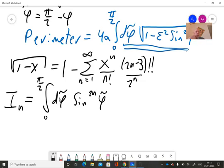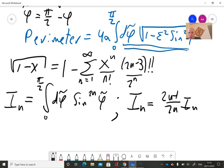And that can be done by integration by parts. We get some recursive relation that we can solve and the relation is i n equals 2n minus 1 over 2n times i n minus 1. And together with i 0 equals pi over 2, we can find a nice expression for i n.